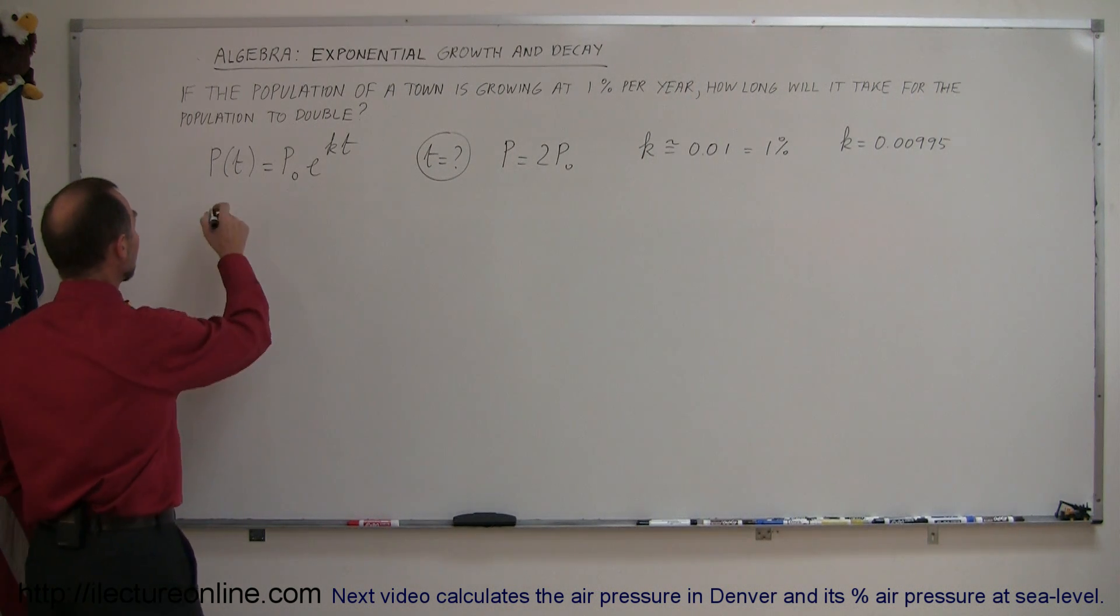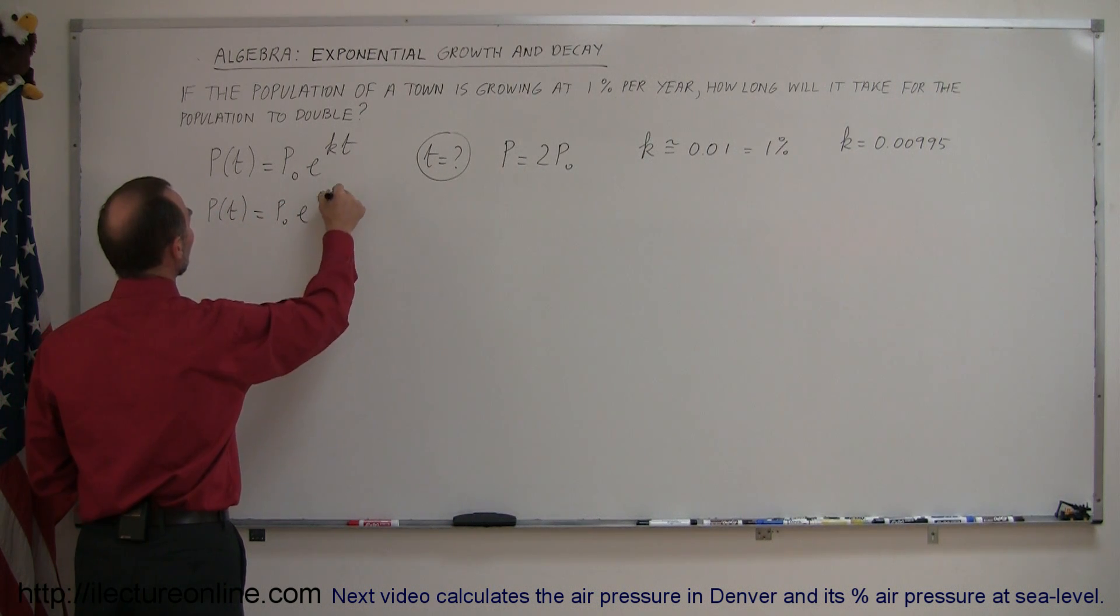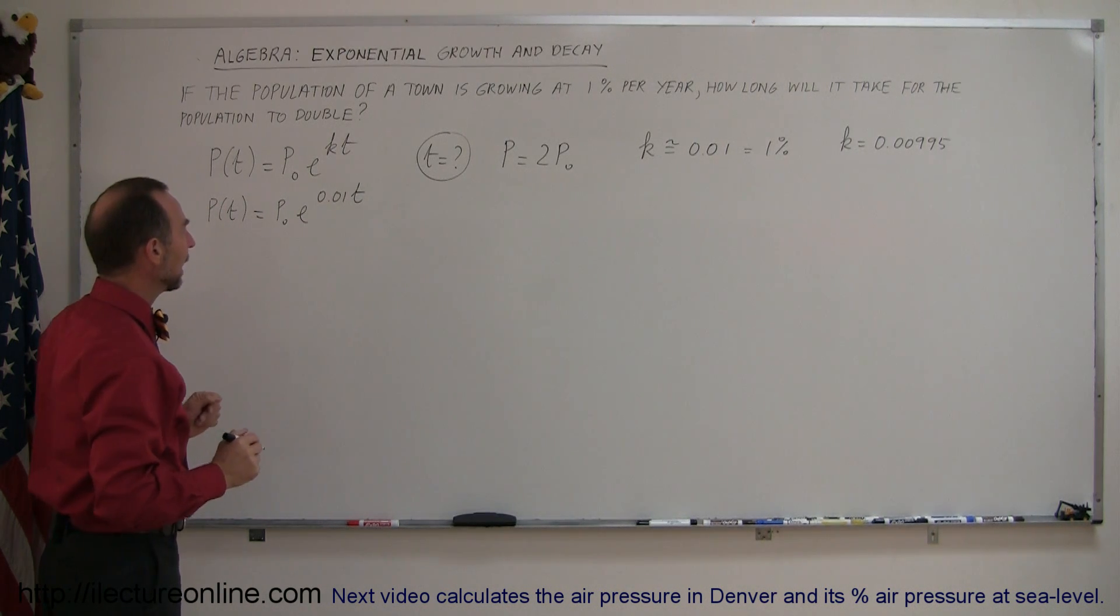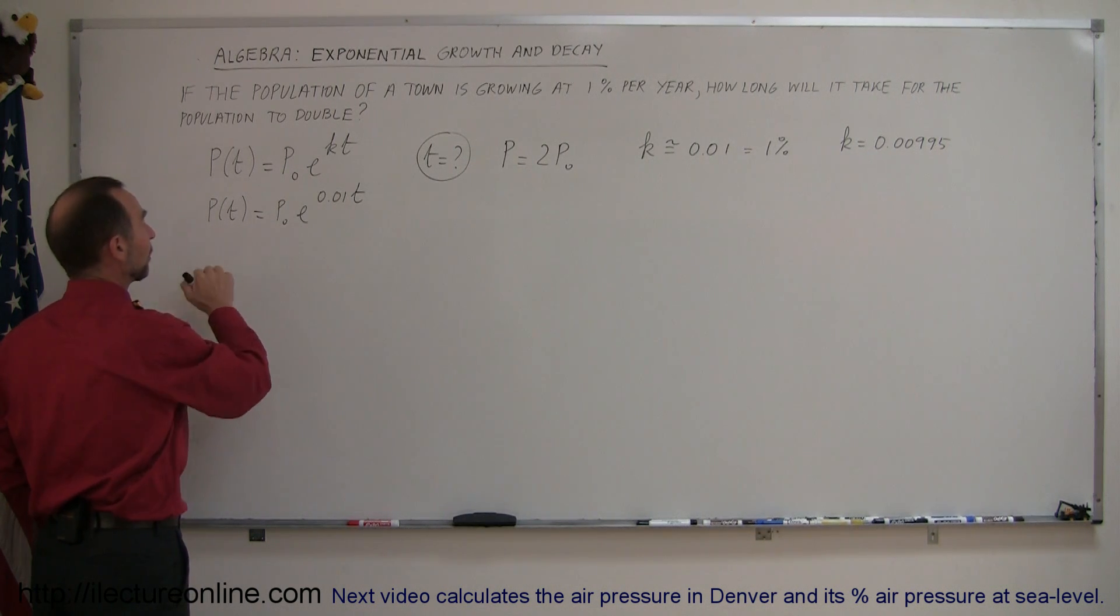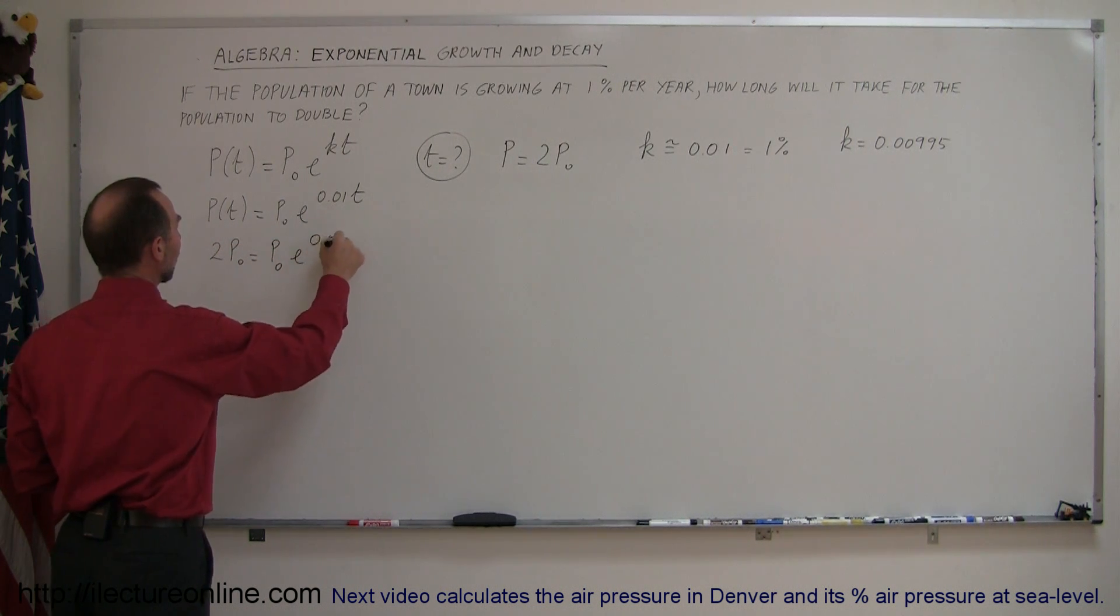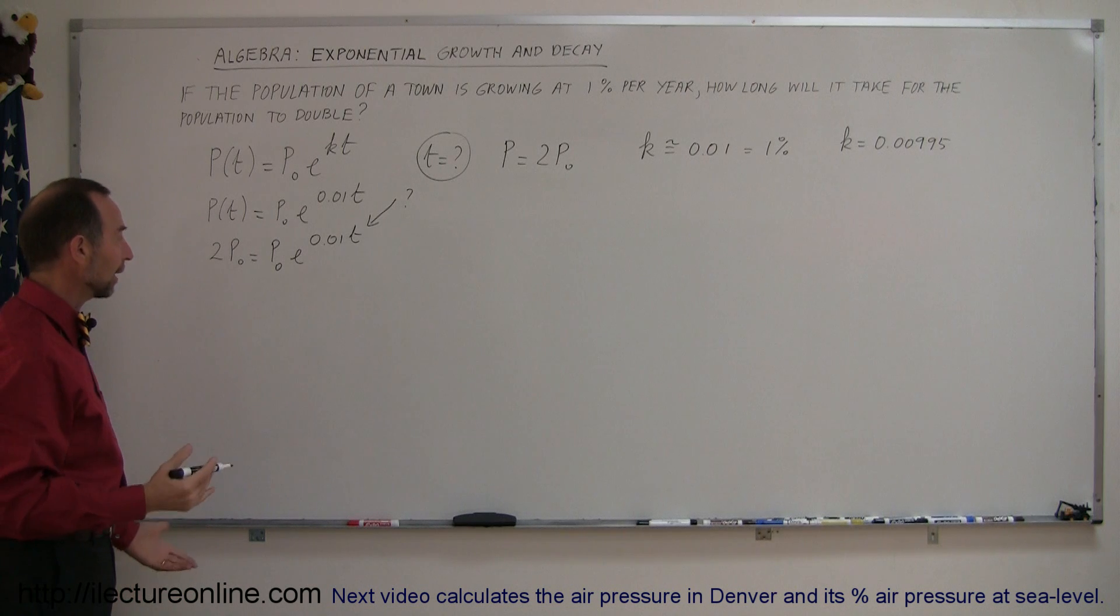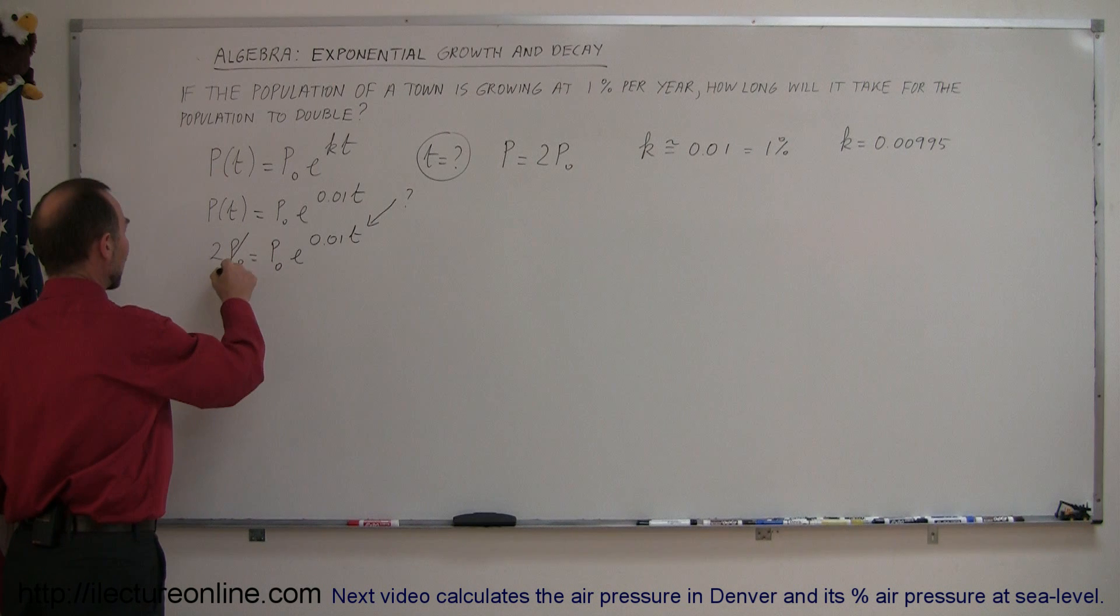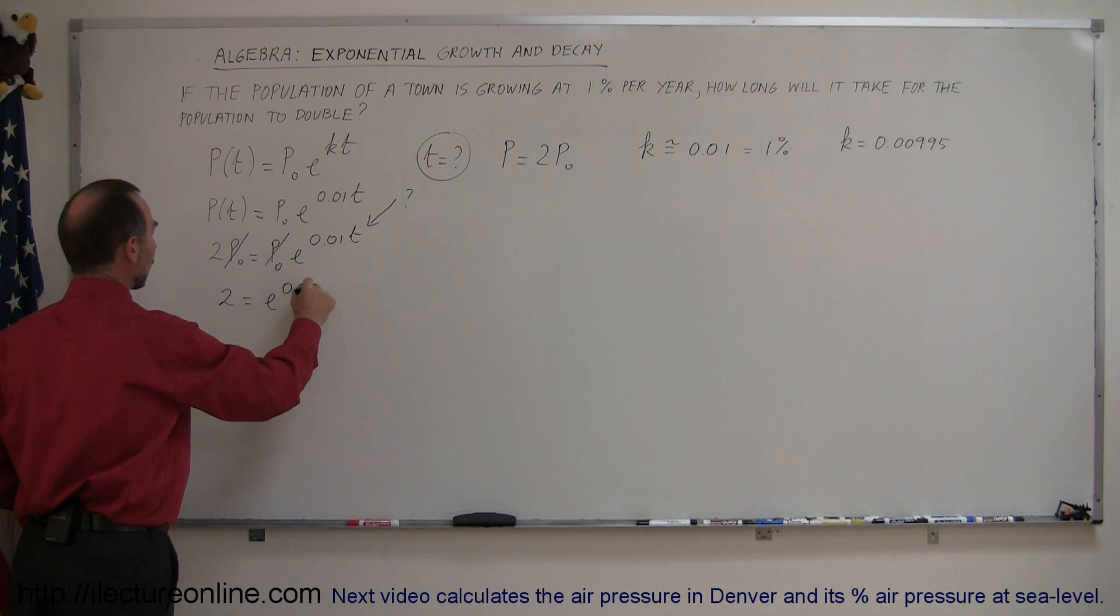If that's the case, then our equation becomes p as a function of time is equal to p sub nought times e to the 0.01t. In this particular case, since we know that the population is going to double, let's put in 2p sub nought for p. So, 2p sub nought equals p sub nought times e to the 0.01t. This is what we're looking for. We're looking for the value of time. Notice that we have p sub nought on both sides of the equation, so we can go ahead and get rid of the p sub nought so our equation becomes 2 is equal to e to the 0.01t.